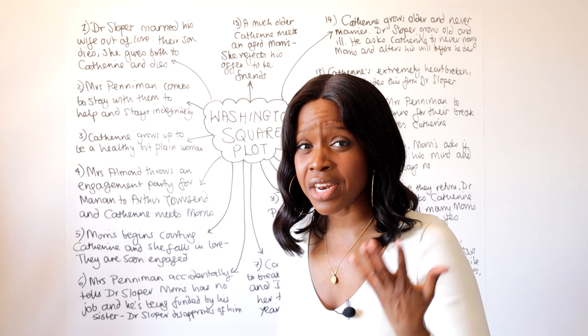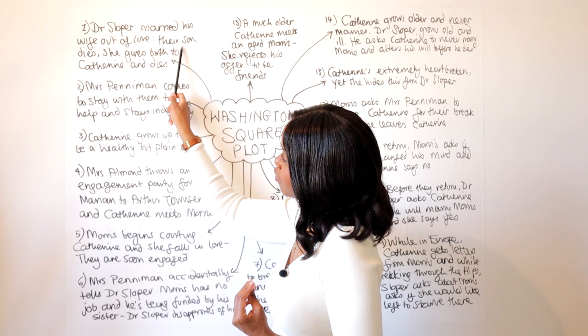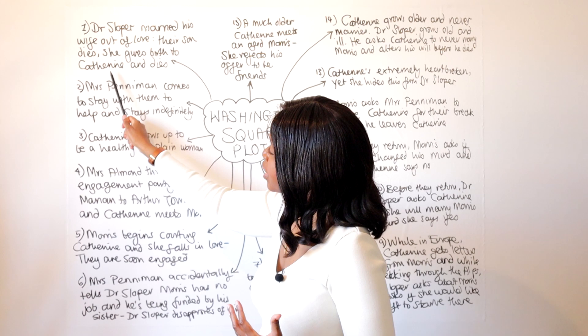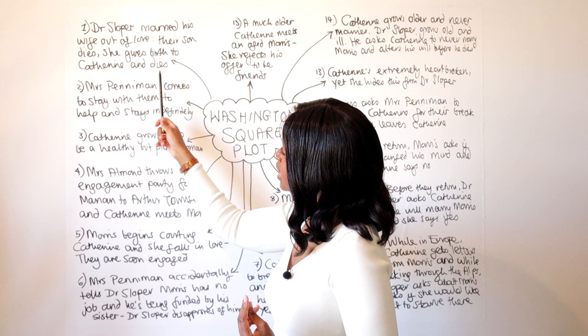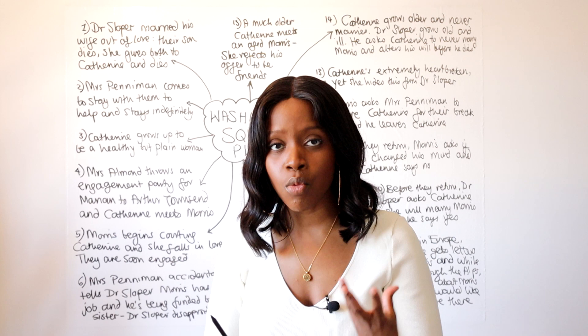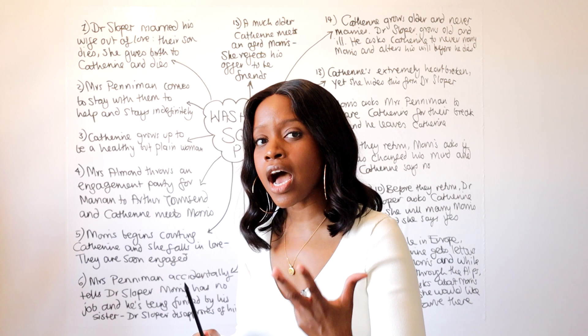The story starts by telling us that Dr. Sloper had married out of love. His wife initially gave birth to a son who died at three years old. She later gave birth to Katherine, and because Katherine was a girl, this was to Dr. Sloper's great disappointment. A week after giving birth to Katherine, his wife herself died — so his real love, a woman he'd married by choice, ended up dying.